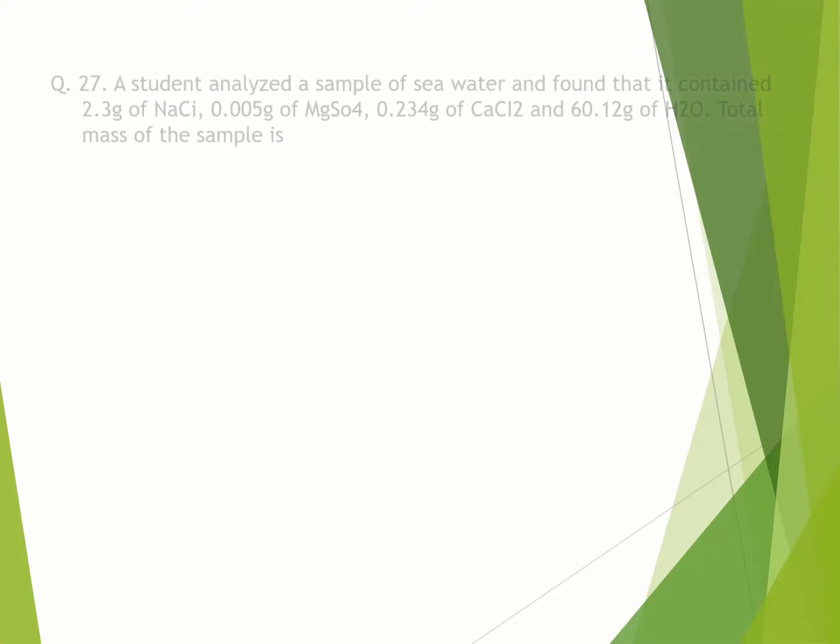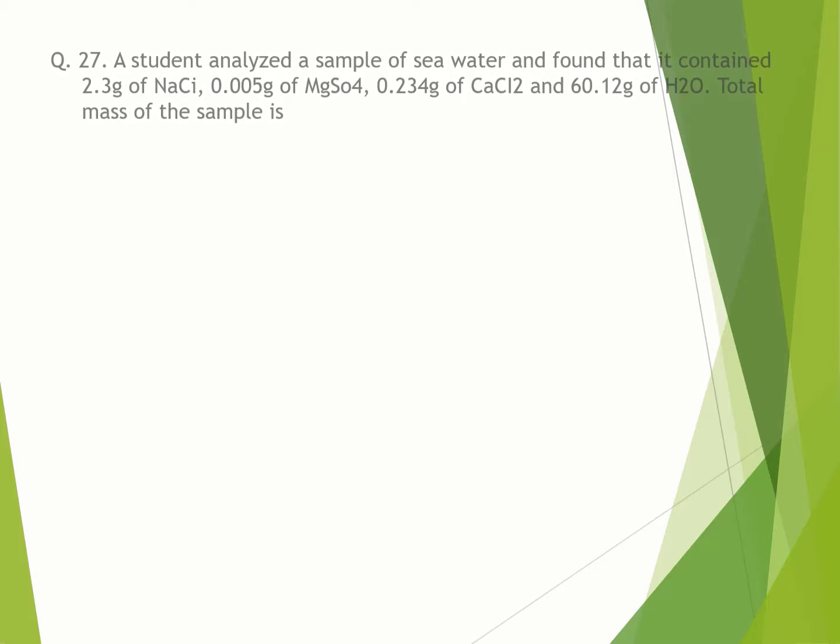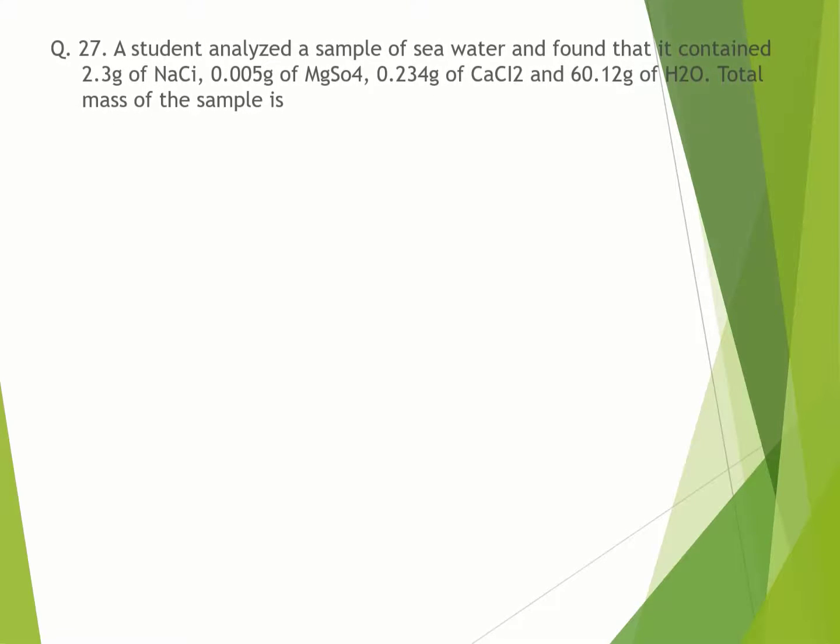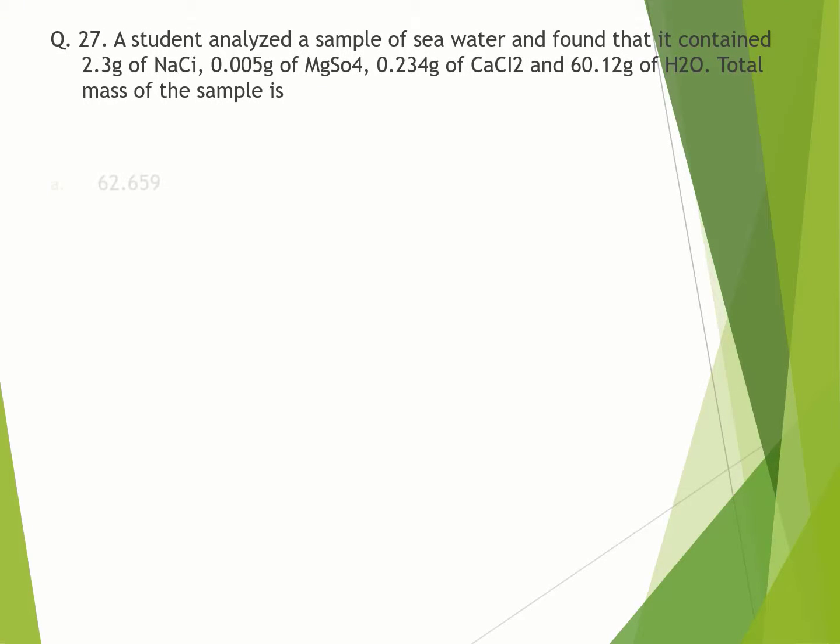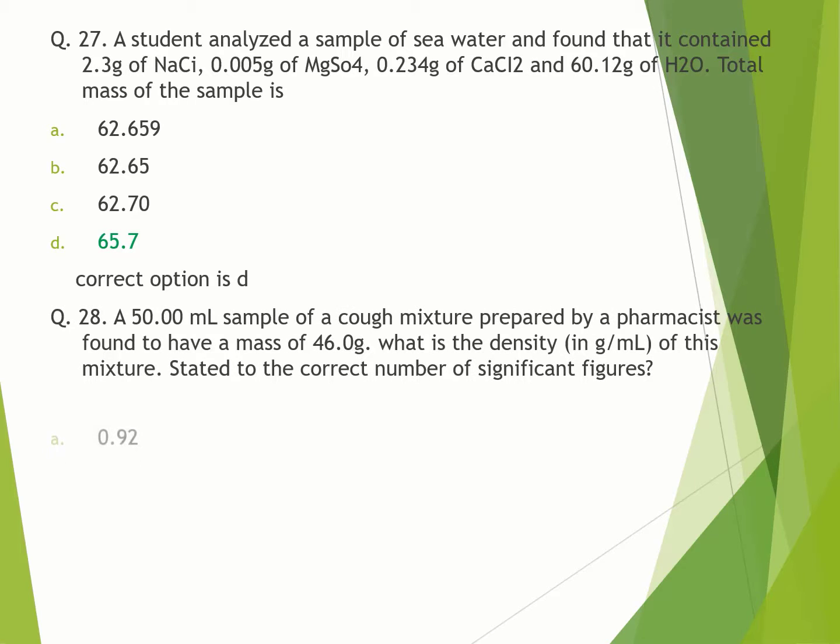Question number 27. A student analyzed a sample of seawater and found that it contained 2.3 grams of NaCl, 0.005 grams of MgSO4, 0.234 grams of CaCl2, and 60.12 grams of H2O. Total mass of the sample is: A. 62.659. B. 62.65. C. 62.70. D. 65.7. Correct option is D. A 50 milliliter sample of cough mixture was found to have a mass of 46 grams. What is the density stated to the correct number of significant figures? A. 0.92. B. 0.920. C. 0.9. Correct option is B.